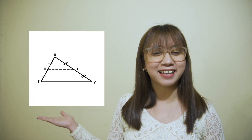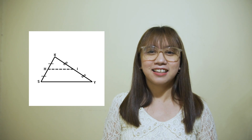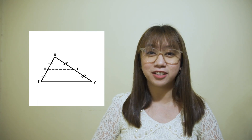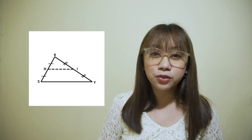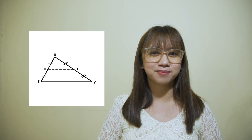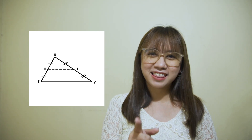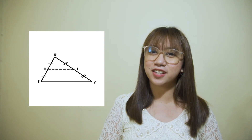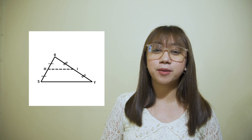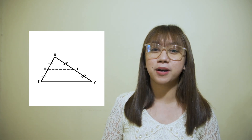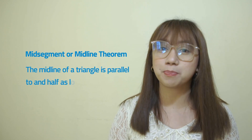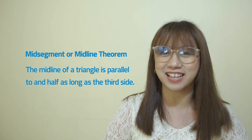Consider the triangle SKY. Let H and I be the midpoints of sides SK and KY respectively. What do you call line segment HI? That's correct! It is called the mid-segment or midline of the triangle. The next theorem gives an important result about the midline of a triangle. The mid-segment or midline theorem states that the midline of a triangle is parallel to and half as long as the third side.